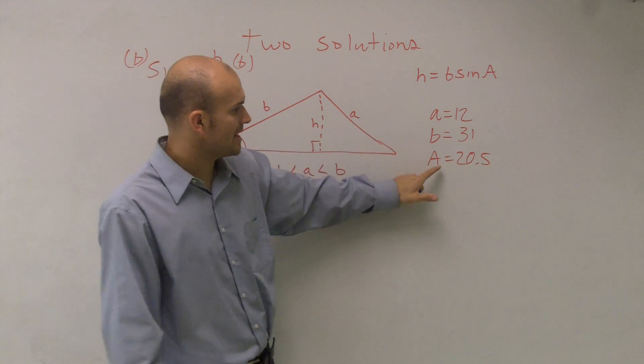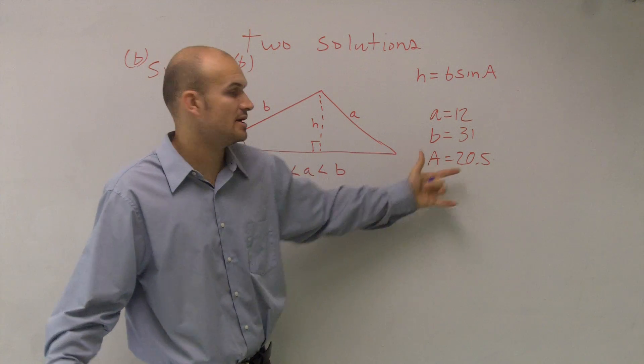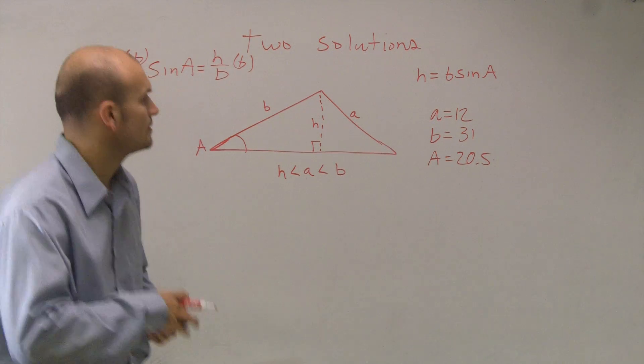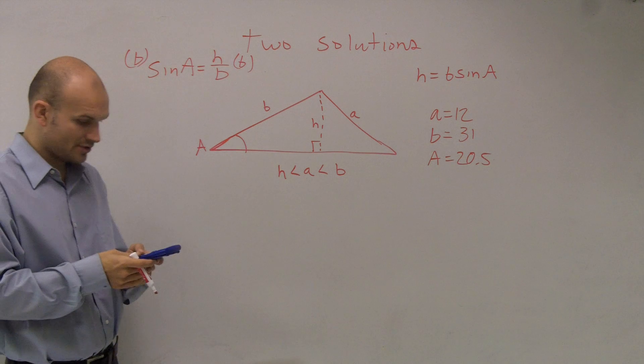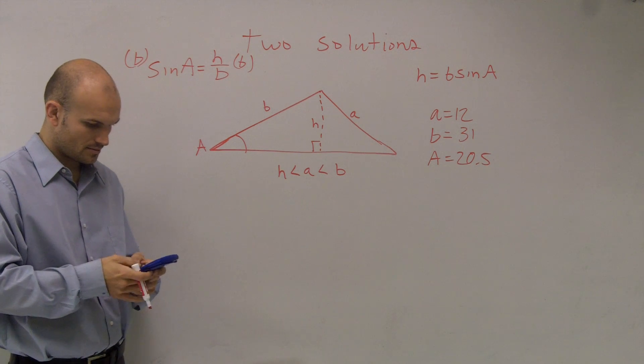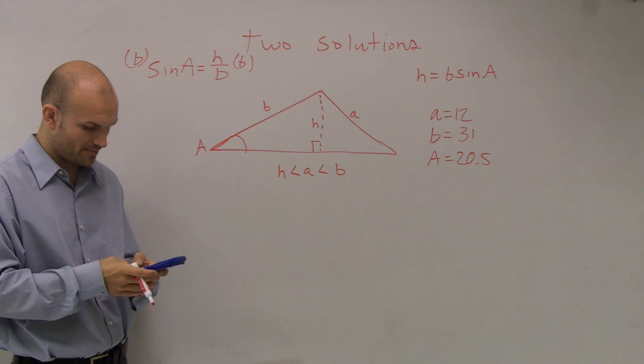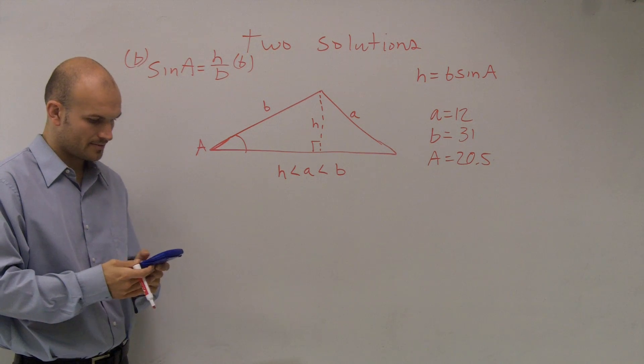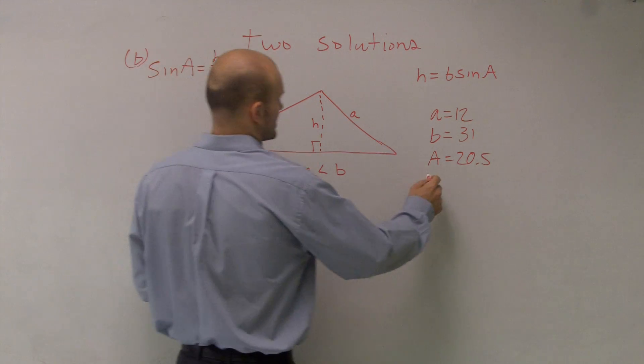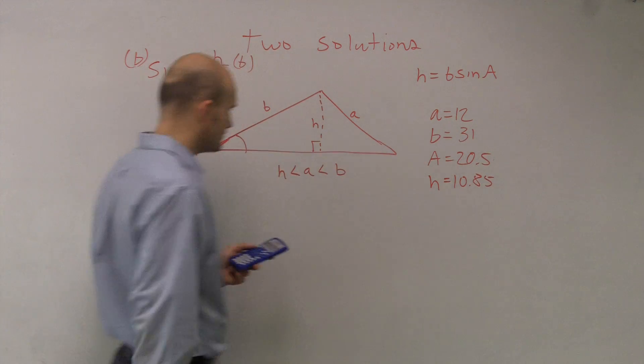So let's see. I have my angle which is 20.5, which I know is acute. So let's go ahead and figure out what our H is. All I simply need to do is take B, which is 31, times the sine of 20.5. And I end up getting 10.85.